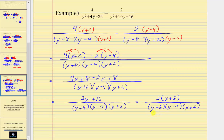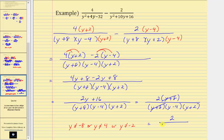Before we simplify, we need to recognize that the denominator would be zero if y equals negative eight, positive four, or negative two, so y can't equal negative eight, positive four, or negative two. Simplifying, y plus eight divided by itself simplifies to one. The simplified difference is two divided by the product of y minus four and y plus two. I hope you found this helpful.